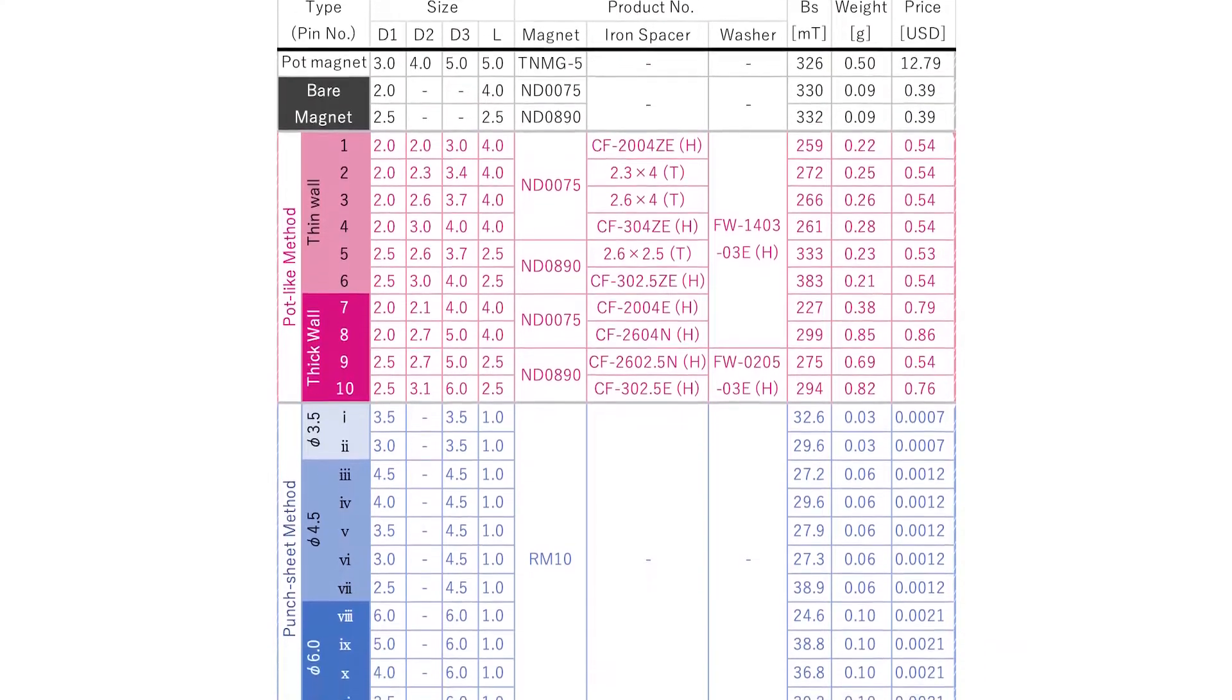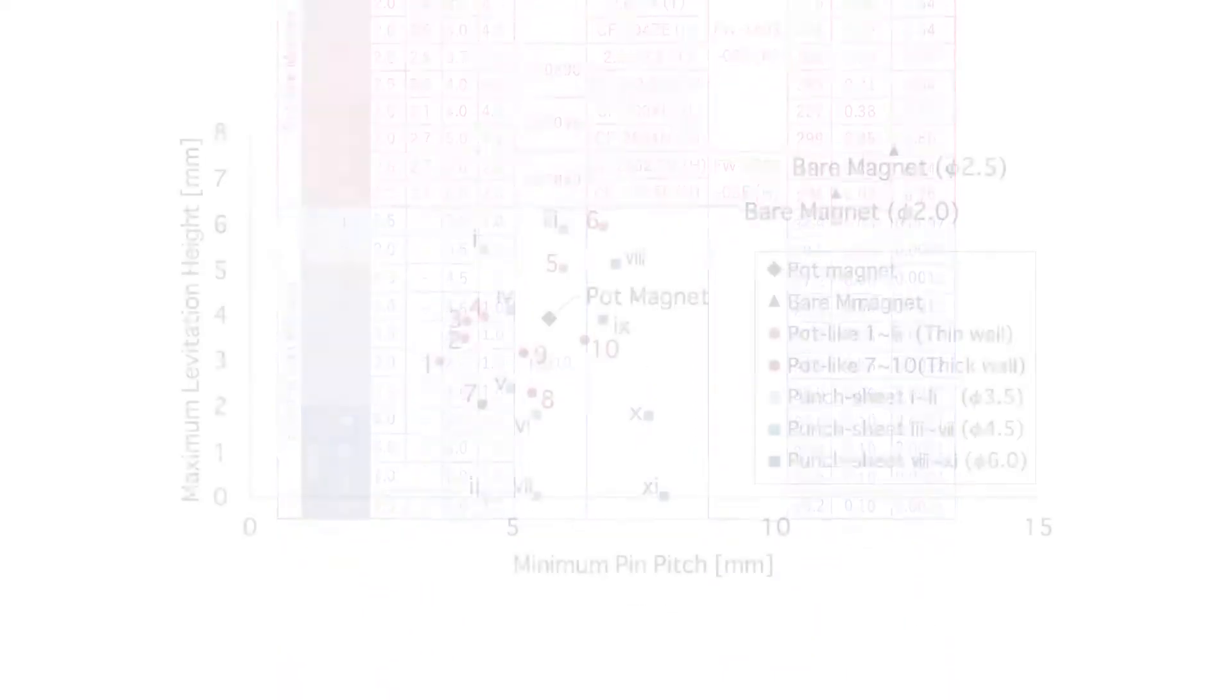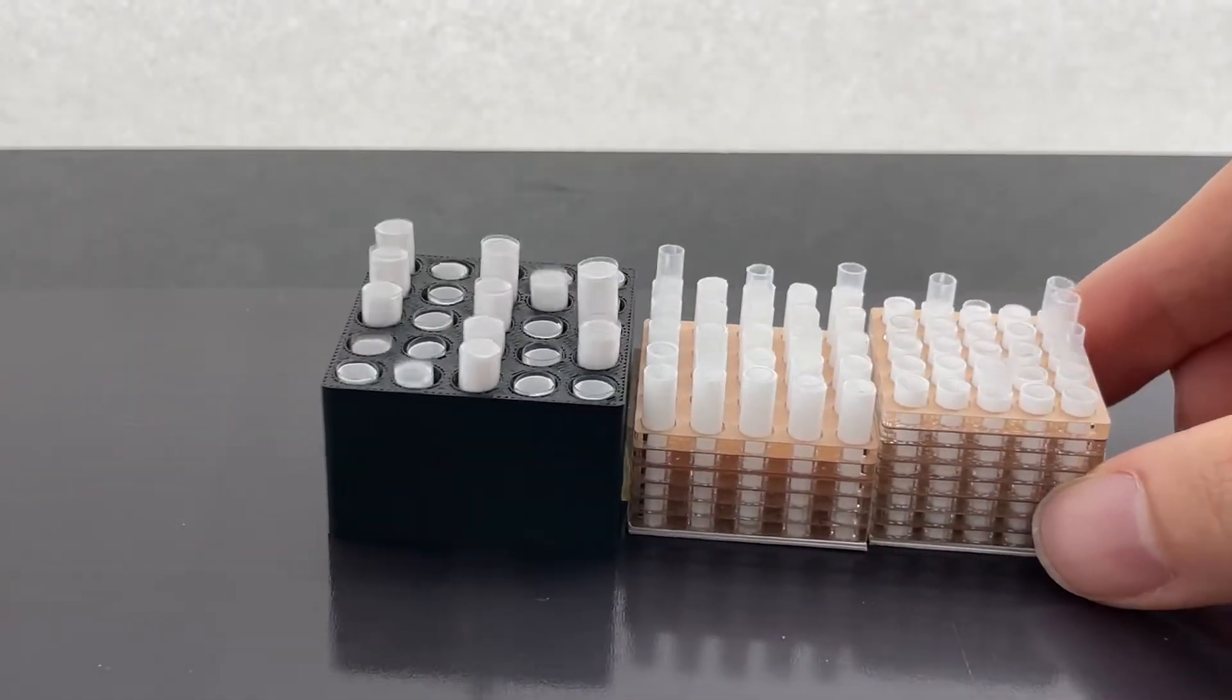We created 23 different types of magnetic pins and measured their minimum pin pitch and maximum levitation height, confirming that various scales of pin arrays can be constructed.